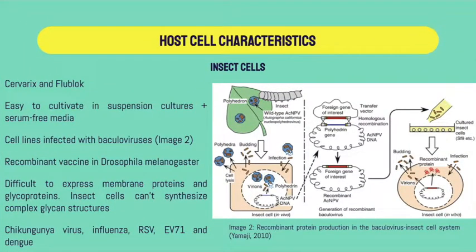Insect cell substrates are employed in recombinant antigen and virus-like particle production. Insect cell cultures for human recombinant vaccine manufacturing is a strategy to create vaccines like Cervarix and FluVoc. Insect cells are easily cultivated in suspension cultures using serum-free media, fulfilling criteria for vaccine development. Using cell lines like SF9, SF21, and H5 cells infected with baculoviruses that carry the heterologous genes of the desired antigens, they work as viral vectors for recombinant protein expression replicating inside infected insect cells. The formation of neo-baculovirus particles is important for processing VLP vaccines.